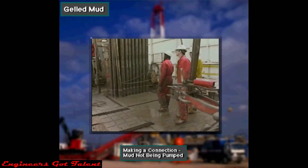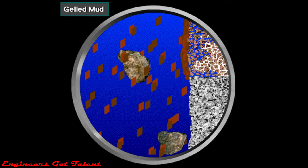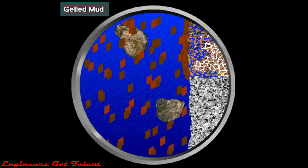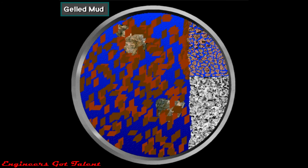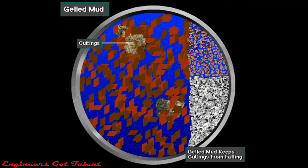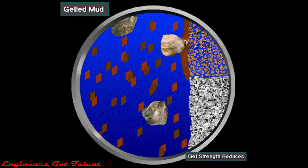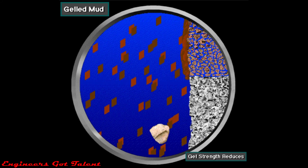When drilling stops — say to let the crew make a connection and add a joint of drill pipe to the string — the driller normally stops pumping mud. When pumping stops, the mud stops moving. At rest, mud gels; that is, it becomes a semi-solid like gelatin. Gelled mud suspends the cuttings, keeping them from falling downhole and piling up around the bit. The ability of a gel to keep the cuttings suspended is measured by its gel strength. When the driller starts the pump and resumes mud circulation, the mud's gel strength reduces, which allows the drilling fluid to flow easier.